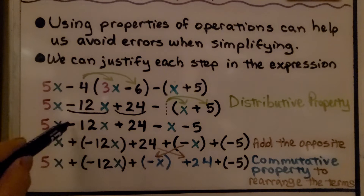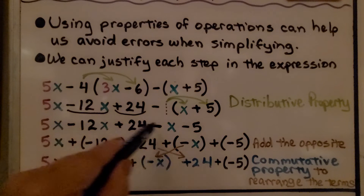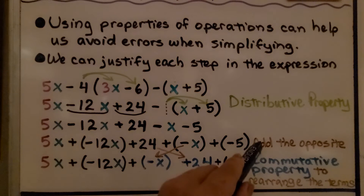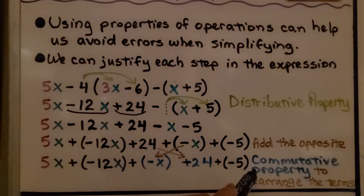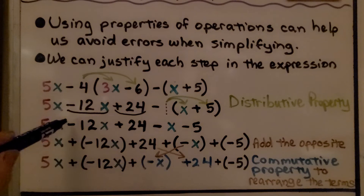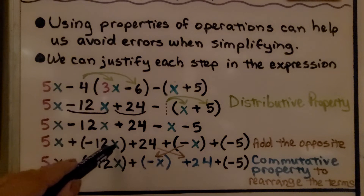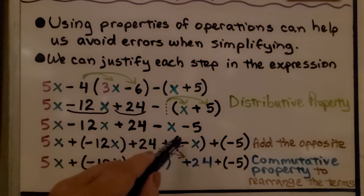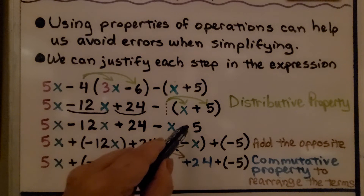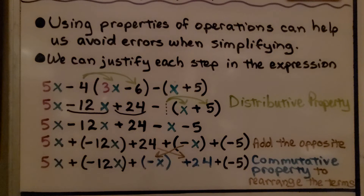Now, because we have all these subtraction symbols — these negative symbols — we need to add the opposite to set up to use the commutative property, because it won't work with subtraction. So instead of minus 12x, we have plus negative 12x. Instead of minus x, we have plus negative x. And instead of minus 5, we have plus negative 5.